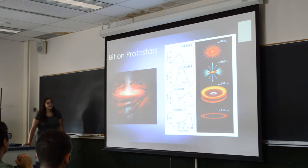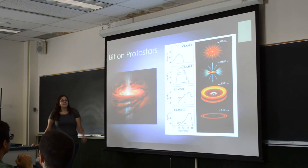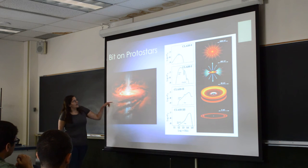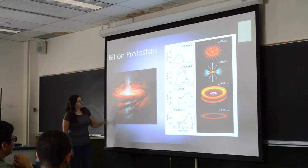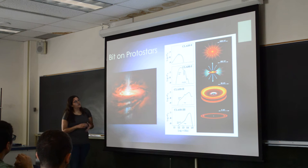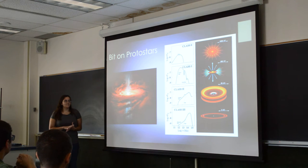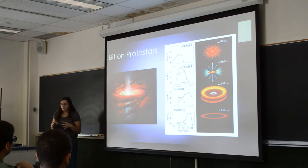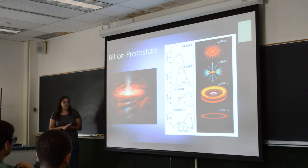A little bit on the protostars: it's really the Class 1 objects that we're focusing on, which kind of look like this. You've got a nice disk going around here and the two outflows on the end. This starts to occur when the envelope starts to collapse from gravity, all the matter begins going into the core, and this is when you start to slowly build and gain mass.